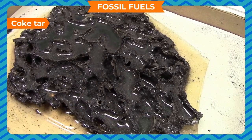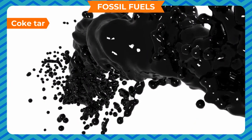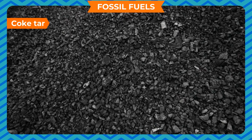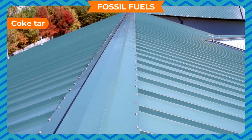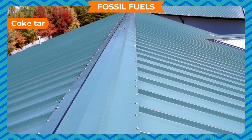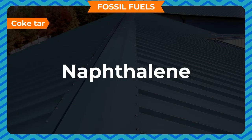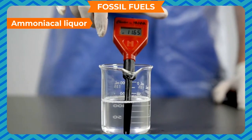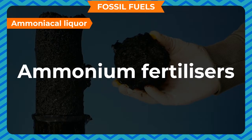Coal tar is the black liquid obtained on destructive distillation of coal. It is a mixture of about 200 different carbon compounds, which can be separated by fractional distillation. Coal tar is used to surface roads and waterproof roofs. Some useful organic compounds like benzene, toluene, phenol and naphthalene are also obtained from coal tar. Ammoniacal liquor is a solution of ammonia in water; on reaction with sulphuric acid, it gives ammonium fertilizers.